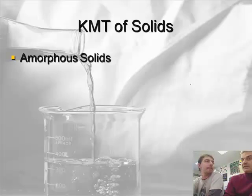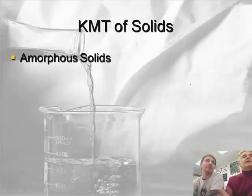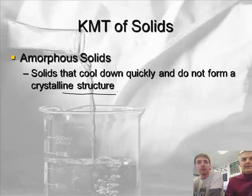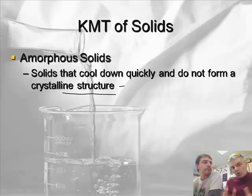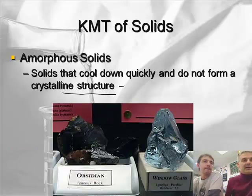There's something called an amorphous solid. An amorphous solid is a solid that cools down quickly and does not form a crystalline structure. We call it flash freezing — it cools really, really fast. Usually when a solid freezes it forms into a crystal, but if it's cooled too quickly that's not going to happen — it just forms into a block.